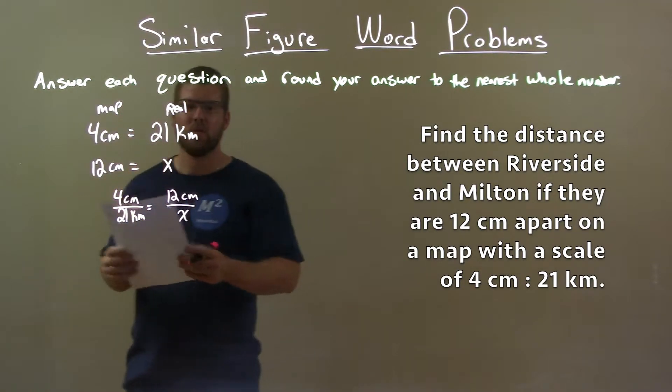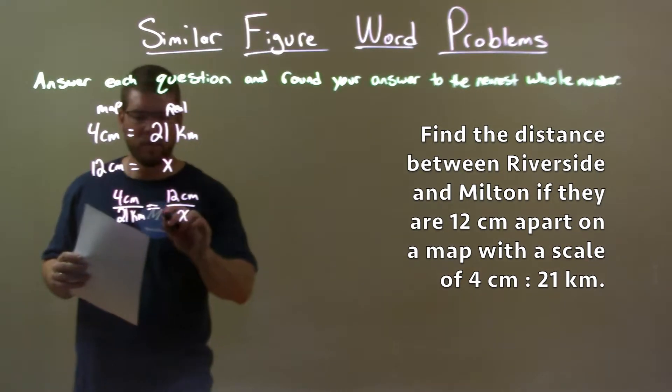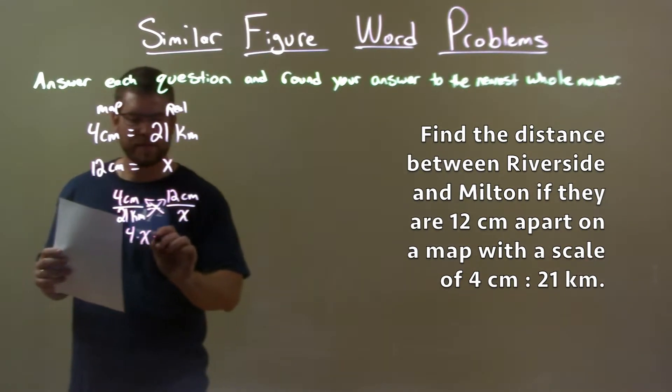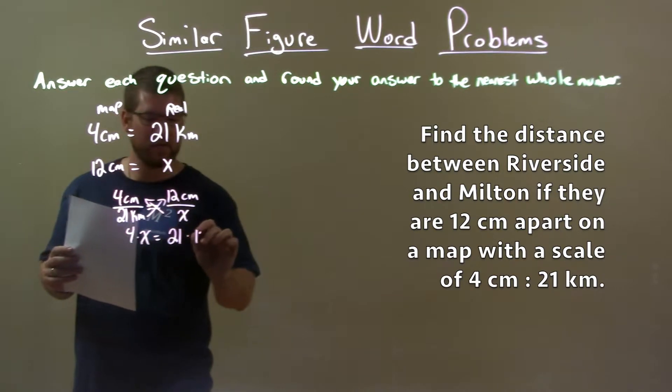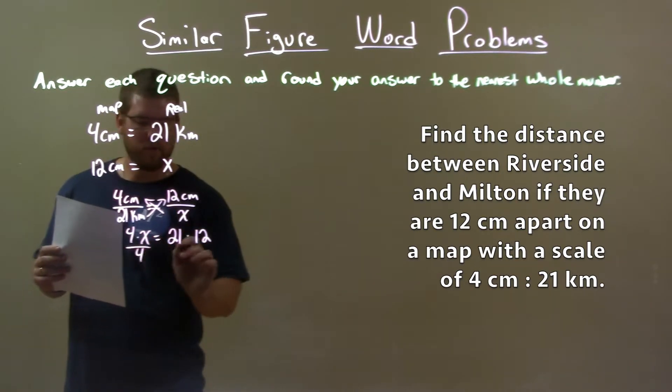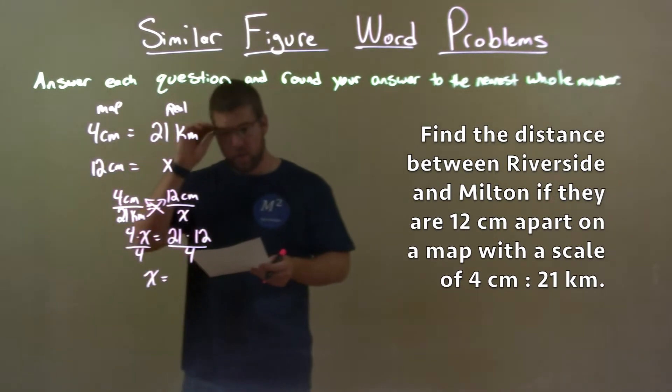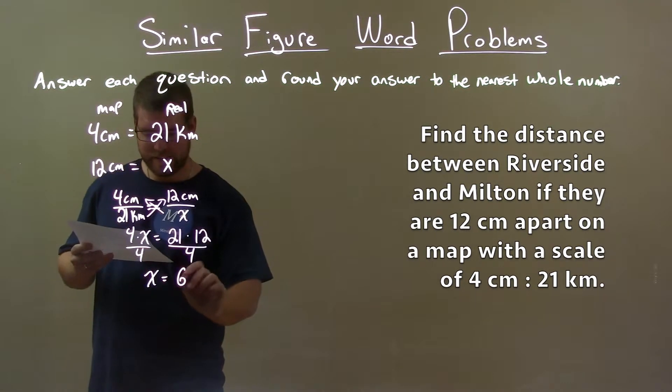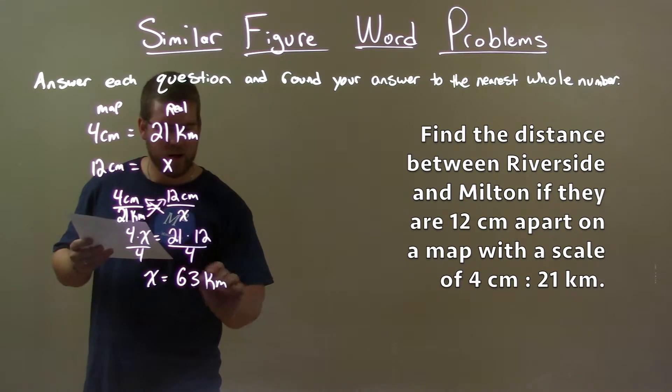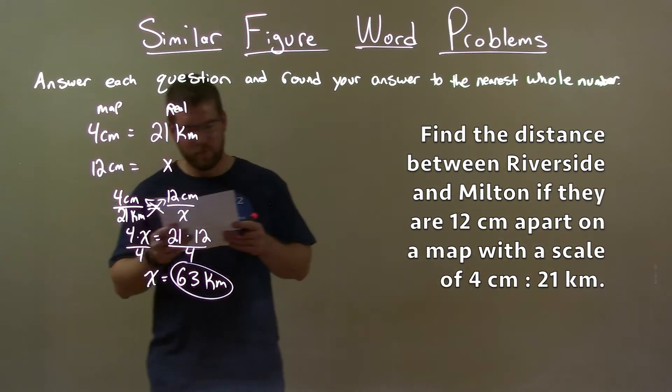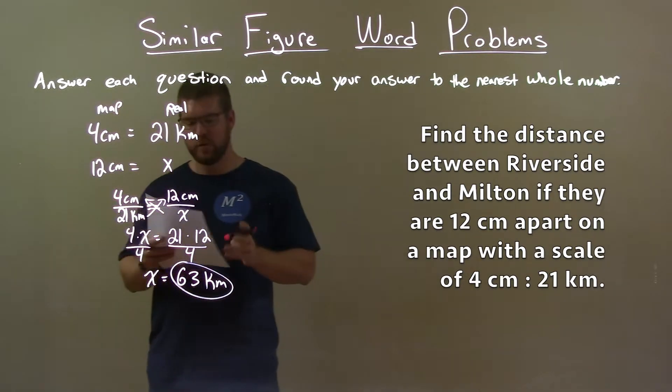Now we solve for x. We cross multiply: 4 times x equals 21 times 12. We then divide both sides by 4. This gives us x by itself, and 21 times 12 divided by 4 is 63 kilometers. So our distance between Riverside and Milton is 63 kilometers.